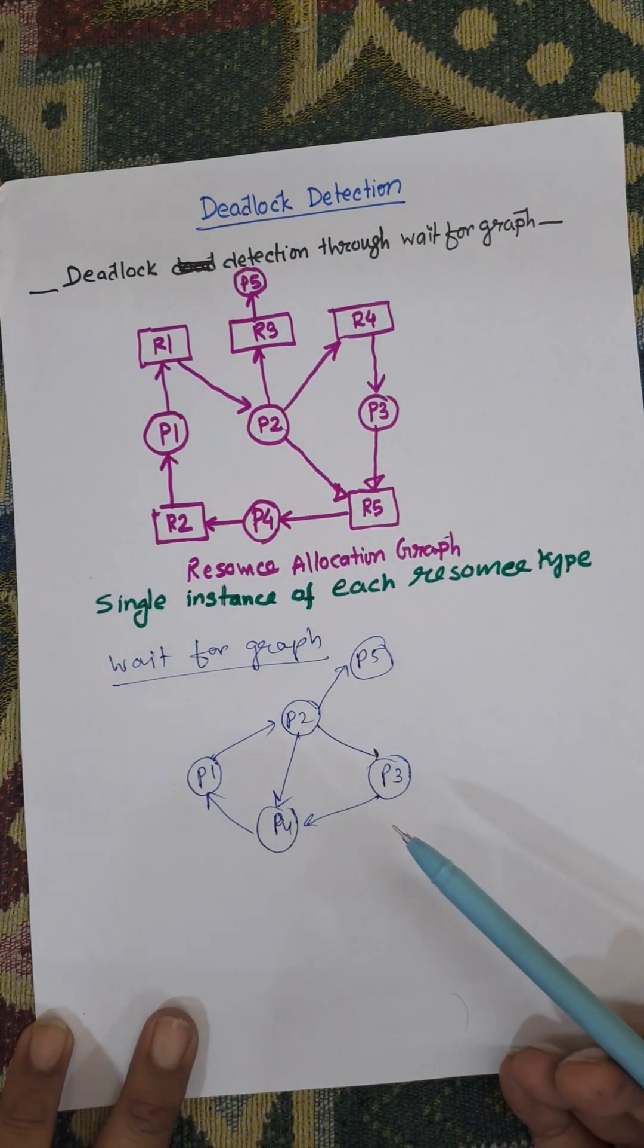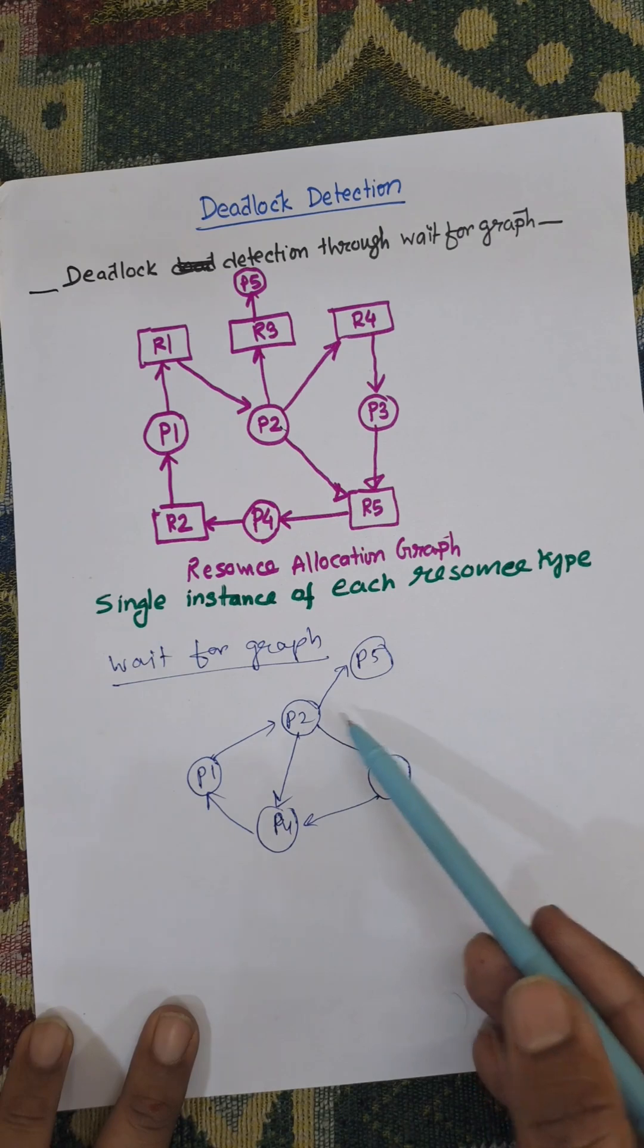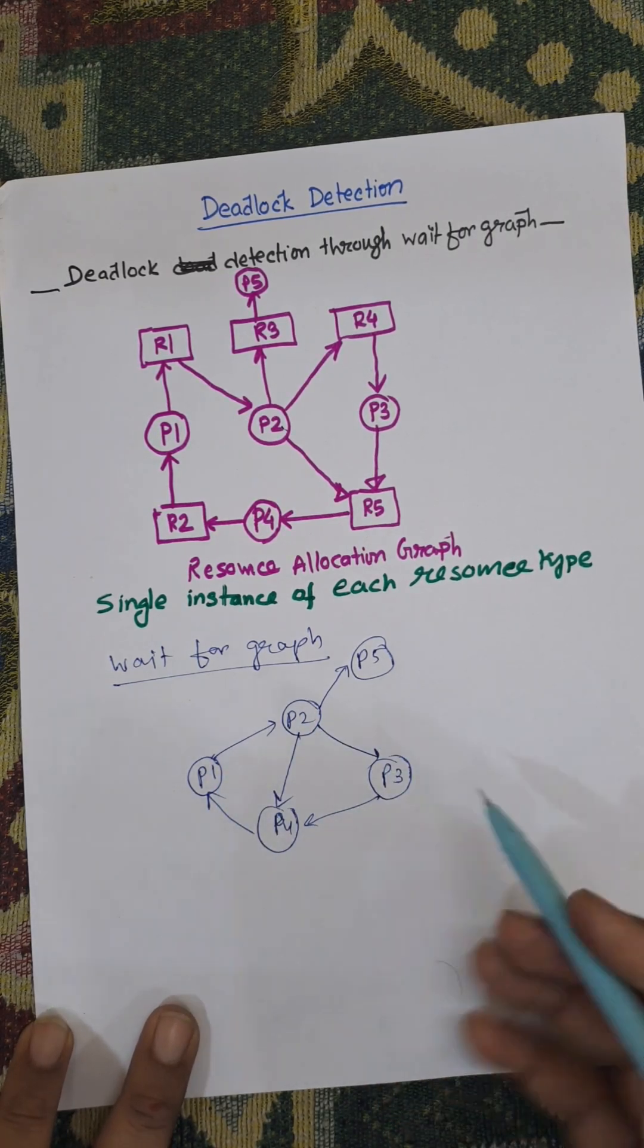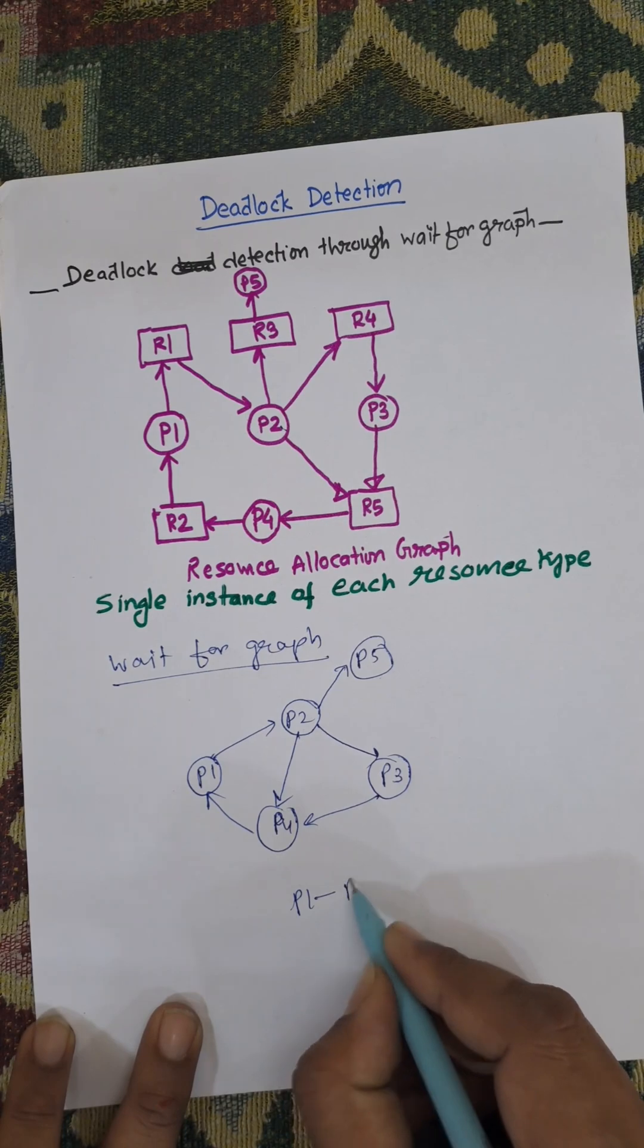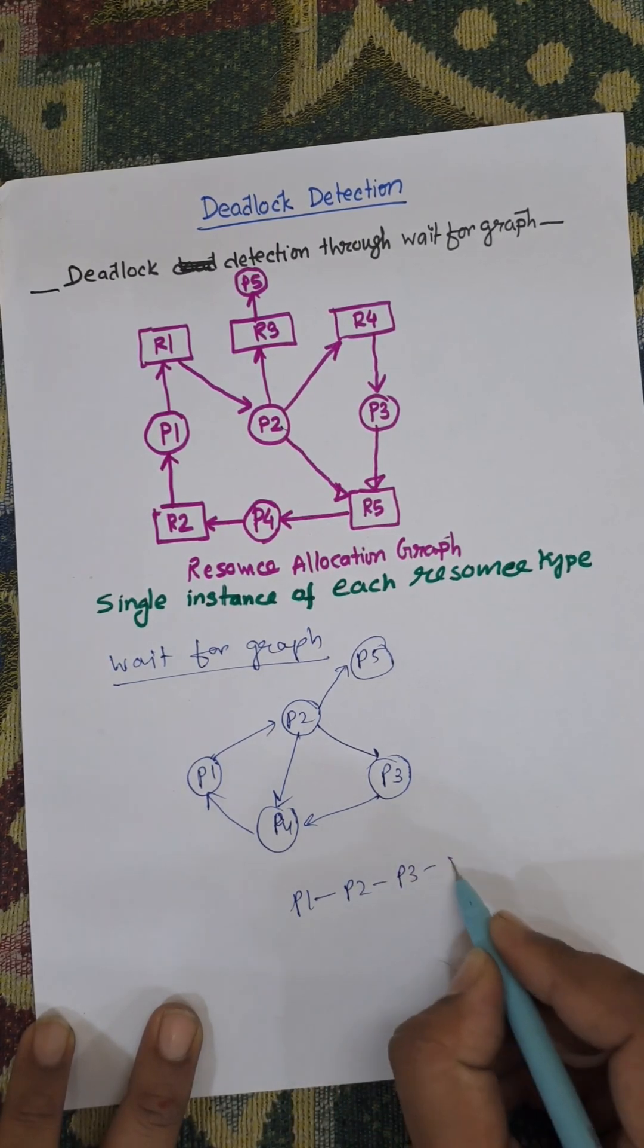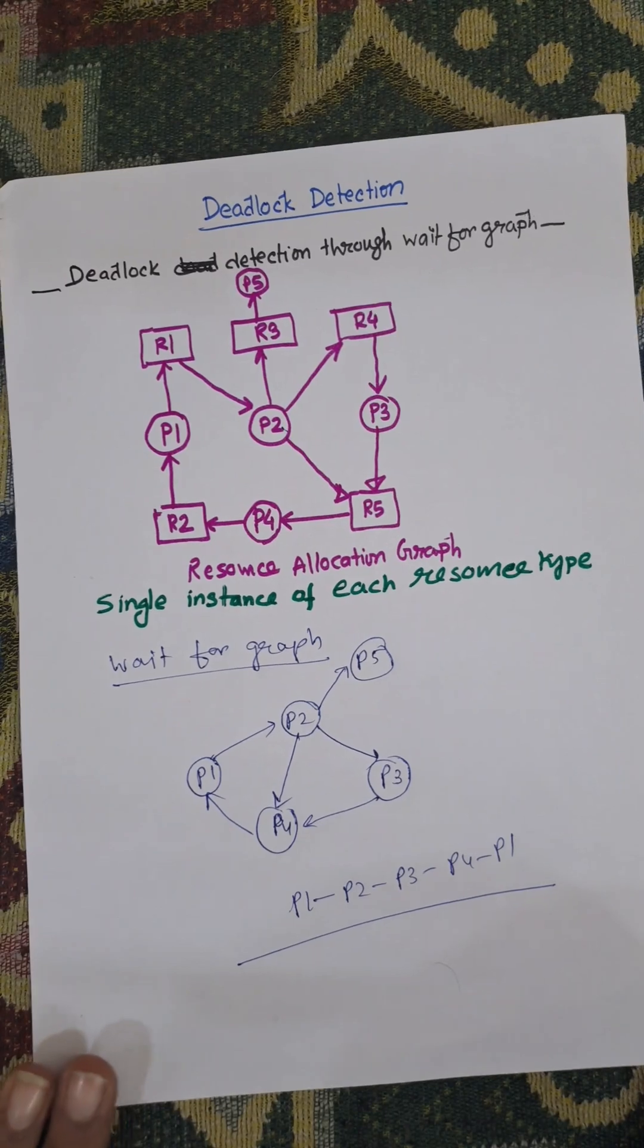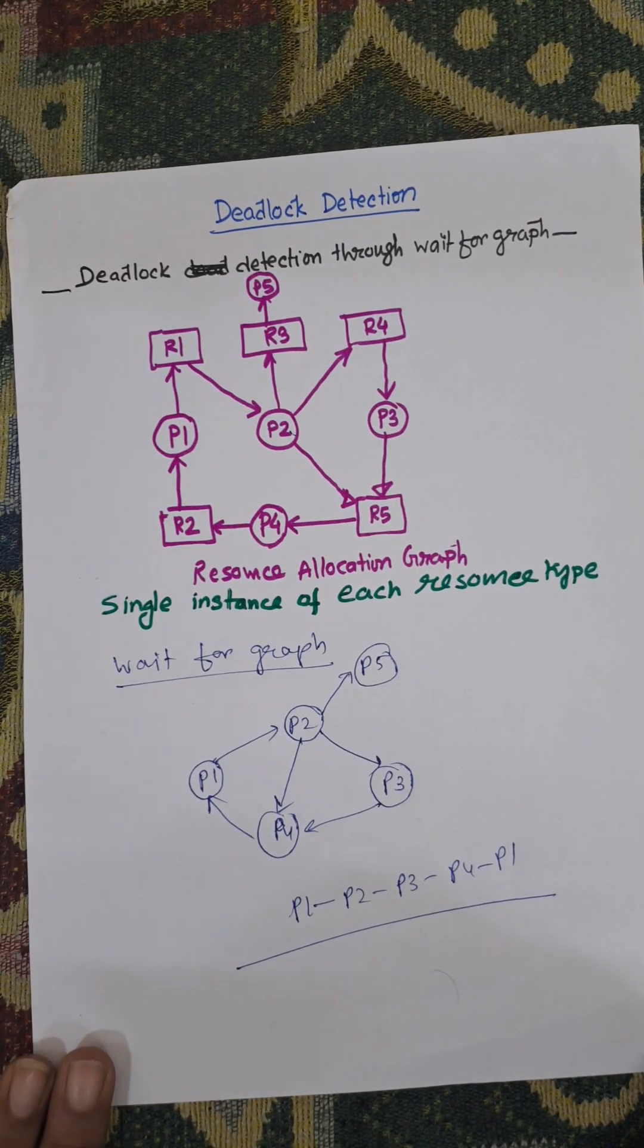Here there is a cycle, that is P1 P2 P3 P4 P1. As there is a cycle P1 P2 P3 P4 and again P1, this means there is a deadlock. So deadlock means there is a cycle present in the wait-for graph.